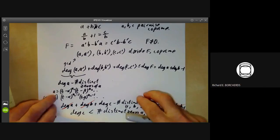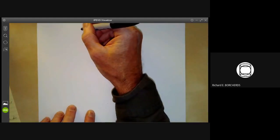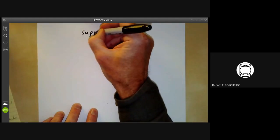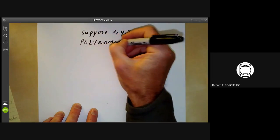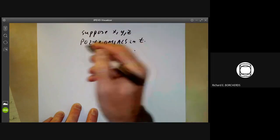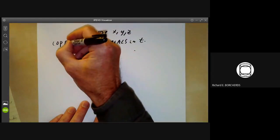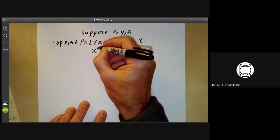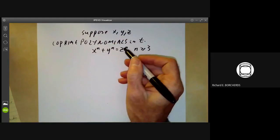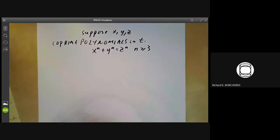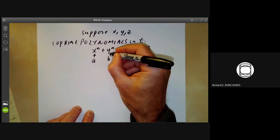So we can give an application of that. We can prove Fermat's Last Theorem for polynomials. So suppose X, Y and Z are polynomials in some variable T, I mean, complex polynomials. And suppose that X to the N plus Y to the N equals Z to the N with N greater than or equal to 3. So this is like Fermat's Last Theorem, except that instead of X, Y and Z being integers, we're taking them to be polynomials. And now we let A be this and B be this and C be this.